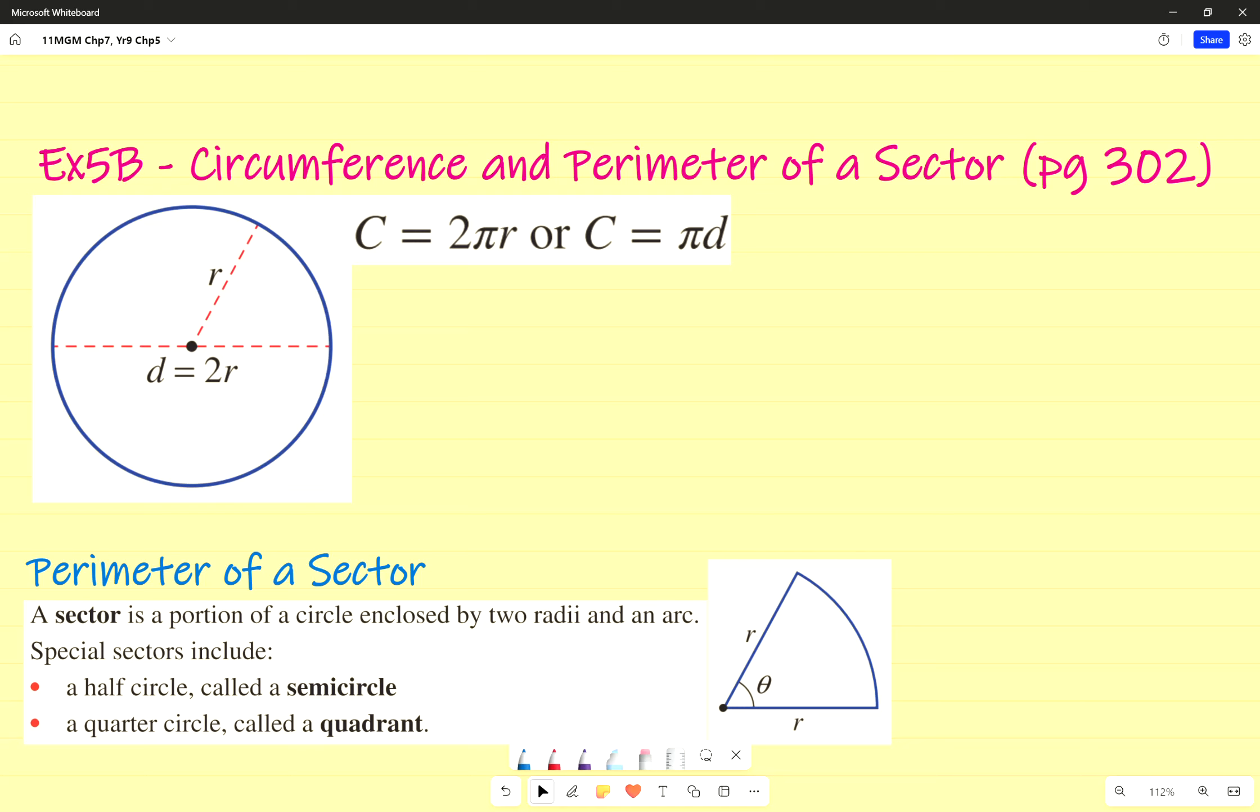Reduction exercise 5b on the circumference and perimeter of the sector, page 302. Now do you have a question? Because we are focusing on something that I hope might be a little bit familiar.